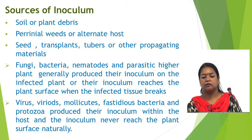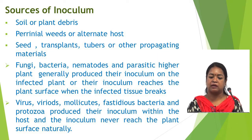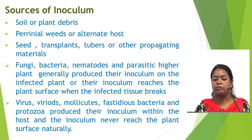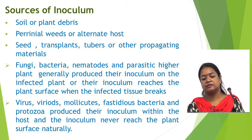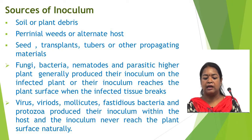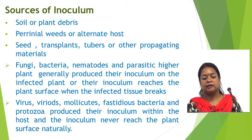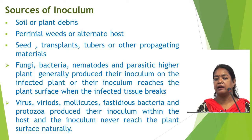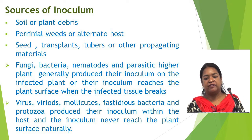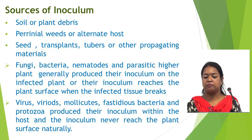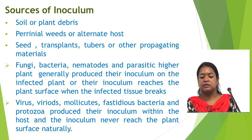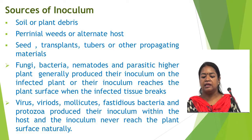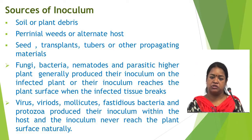The sources of inoculum — where the inoculum comes from — include soil or infected plant debris as major sources. Sometimes it comes from perennial or alternate hosts, and it can also come from seeds, transplants, tubers, and other propagated materials. In fungi, bacteria, nematodes and parasitic higher plants, their inoculum is generally produced on the infected plant or reaches the plant surface when infected tissue breaks.